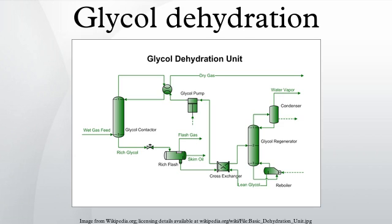The purpose of a glycol dehydration unit is to remove water from natural gas and natural gas liquids. When produced from a reservoir, natural gas usually contains a large amount of water and is typically completely saturated or at the water dew point. This water can cause several problems for downstream processes and equipment. At low temperatures, the water can either freeze in piping or, as is more commonly the case, form hydrates with CO2 and hydrocarbons.